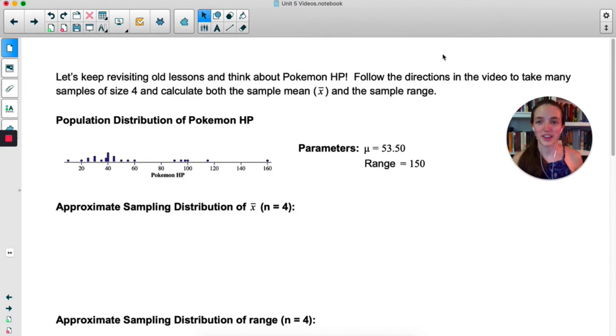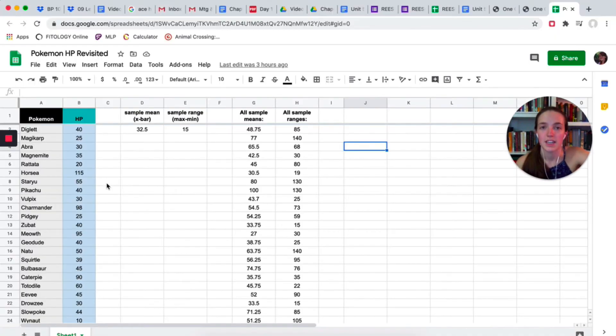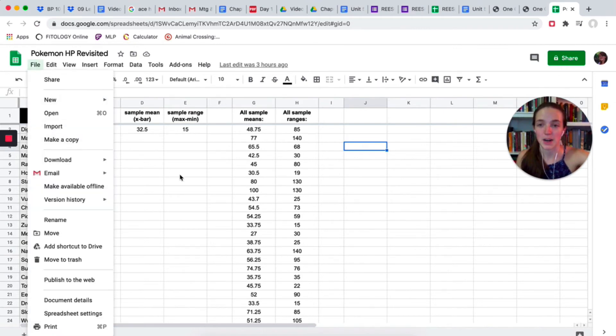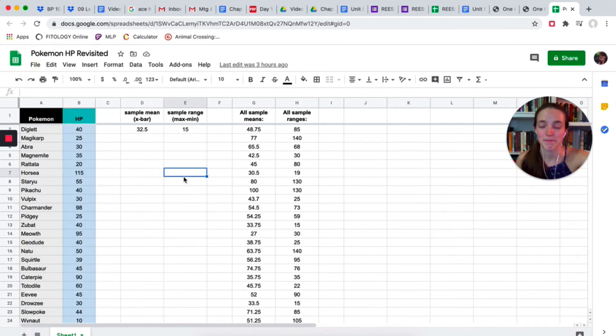We're on a roll with revisiting old lessons, so why don't we revisit that Pokémon example that we did way back in Unit 1. So this should be a link in your notes. If you click on that, it'll take you to a spreadsheet of the Pokémon data. Now this is a little bit different than the last time we worked with this data, so what you should do is go up to File, Make a Copy, and then you'll be able to mess with it. What we want to do is take a random sample of Pokémon, and we're going to calculate two things with that sample. We're going to calculate the sample mean, or x bar, and we're also going to calculate the sample range.